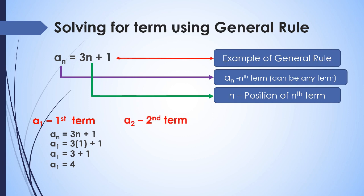For the second term, a sub 2, we use the same general rule a sub n equals 3n plus 1. We replace a sub n with a sub 2 and n with 2, giving a sub 2 equals 3 times 2 plus 1. Solving: a sub 2 equals 6 plus 1, so a sub 2 equals 7. The second term is 7.